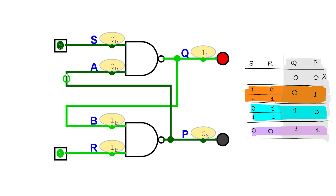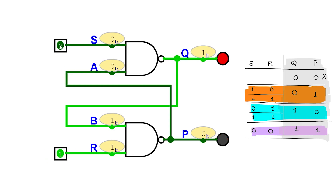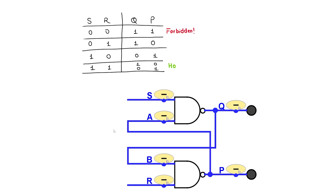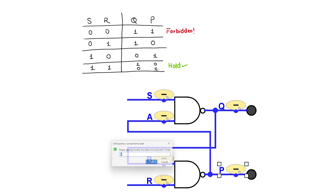Now what if the inputs both start as zero and then change to one simultaneously? This is undefined behavior — it will depend on which input change is detected first. It will detect zero-one or one-zero first, then change its output, and finally hold it when both inputs become one. Since we cannot predict this behavior, let's call it a forbidden combination which is to be avoided. Ignoring the forbidden and hold mode, we can see the second output is always the inverted version of the first output.